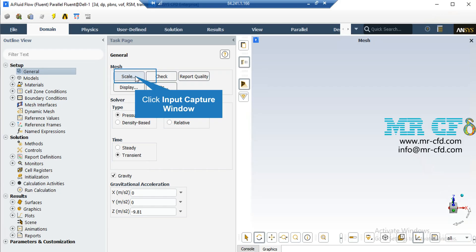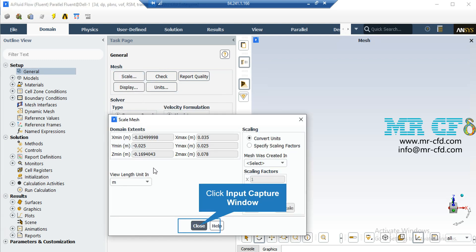Under the general setup tab, you can see different buttons from scales to units. By clicking on the scale, a new window will appear showing you the dominant extents of your geometry. Also, under the view length unit section, you can see the default geometry units which is meter in this project.